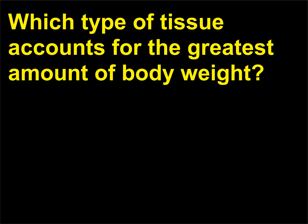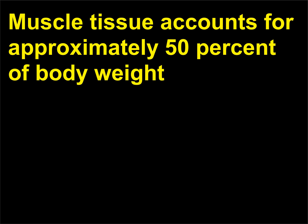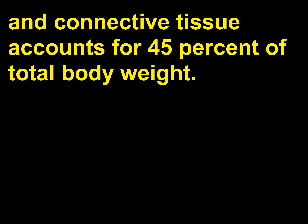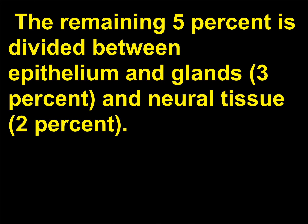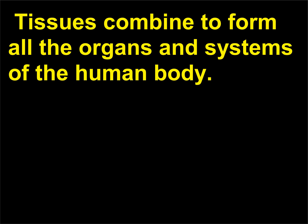Which type of tissue accounts for the greatest amount of body weight? Muscle tissue accounts for approximately 50% of body weight, and connective tissue accounts for 45% of total body weight. The remaining 5% is divided between epithelium and glands, 3%, and neural tissue, 2%. Tissues combine to form all the organs and systems of the human body.